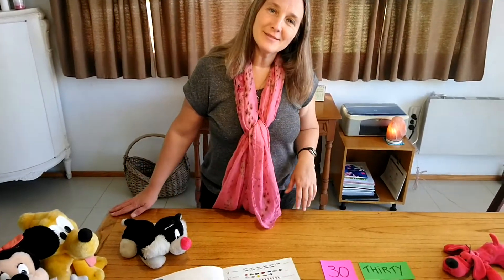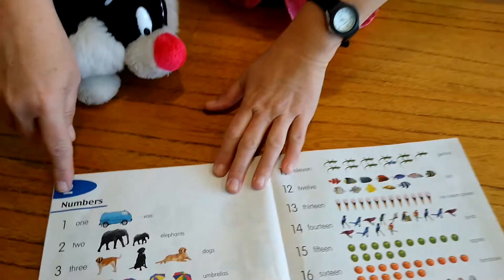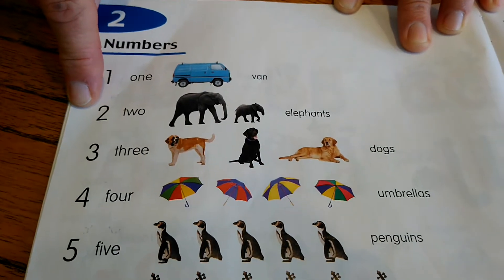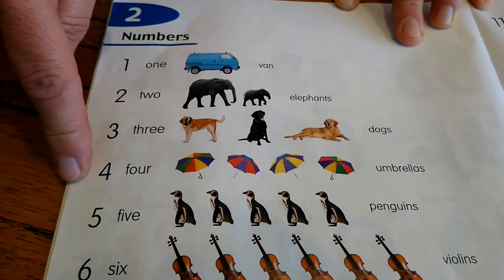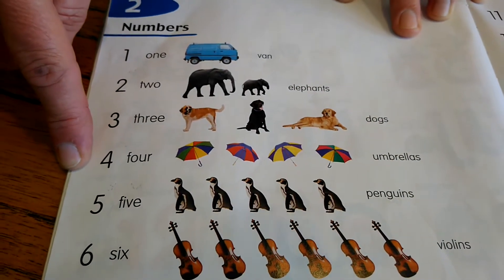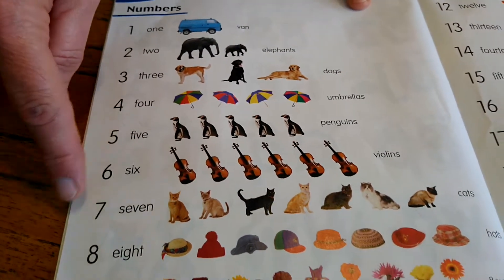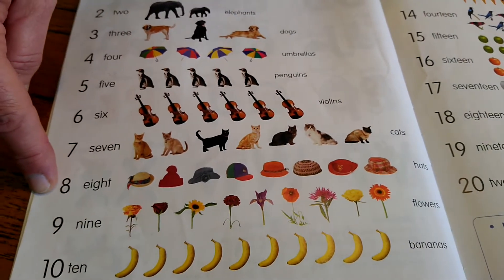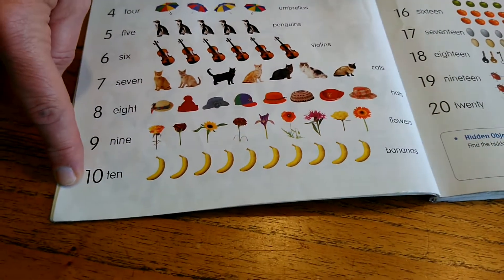Hi kids, how are you today? Let's work with numbers. Come and have a look. Numbers: we have number one, two, three, four, five, six, seven, eight, nine, ten.